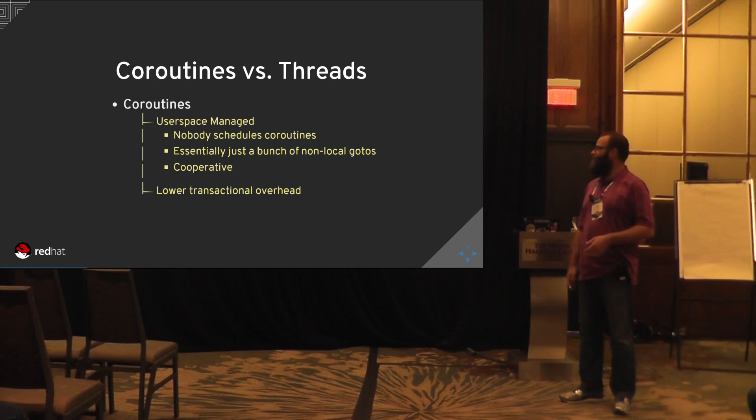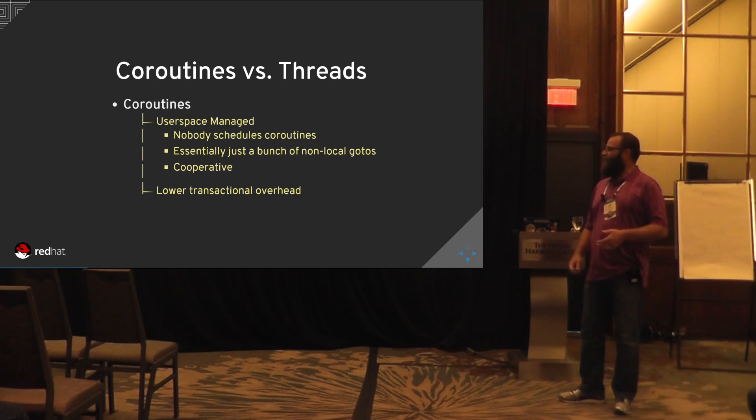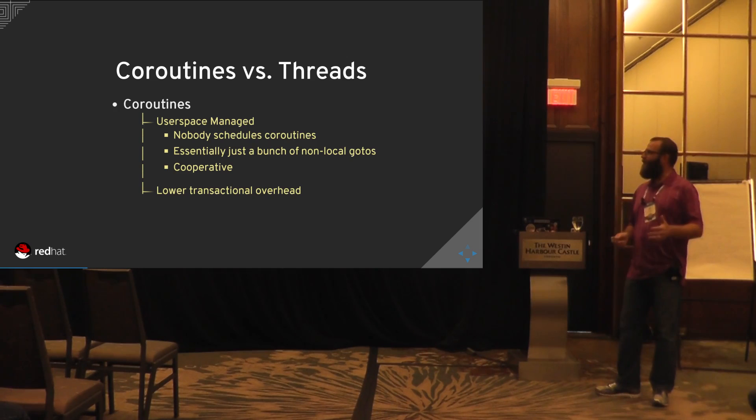With coroutines, since we have a relatively small amount of stuff we need to save for a context switch — since we're jumping around on a stack space — it has lower transactional overhead. It's less friction for our multitasking.